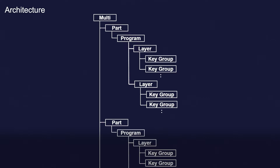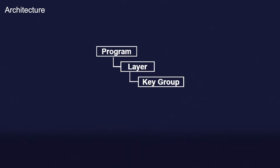Falcon's sound hierarchical structure consists of a multi, parts, programs, layers, and keygroups. A multi and parts are for using Falcon as a multi-timbral instrument, so I will not explain it in this video. A program is a unit to be saved and loaded as a preset. The smallest unit is called a keygroup, which is mapped to a keyboard. The simple synthesizer I will make will have one layer and one keygroup.